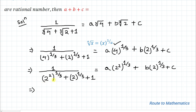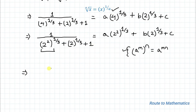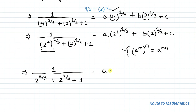Now by applying another exponential law — a to the power m, whole to the power n, equals a to the power mn — we multiply the powers. So we can write it as 1 divided by (2 to the power 2 by 3 plus 2 to the power 1 by 3 plus 1) equals a multiplied with 2 to the power 2 by 3 plus b multiplied with 2 to the power 1 by 3 plus c.